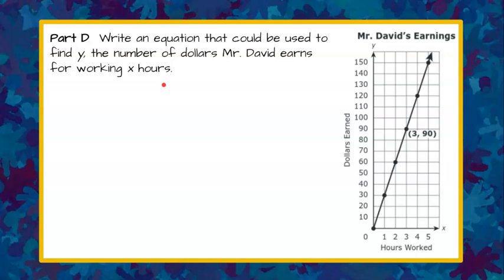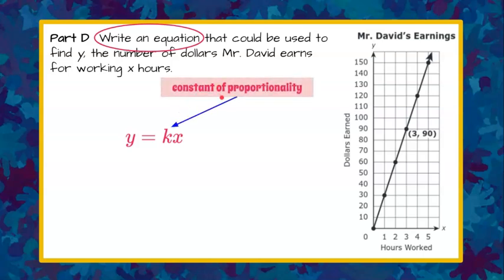Welcome back. When we have a proportional relationship, we can write the equation of the line in the form y equals k times x, where k represents our constant of proportionality, which is a big word that represents unit rate when we're talking about a graph of a proportional relationship. And we discovered in a previous part that our unit rate was 30.